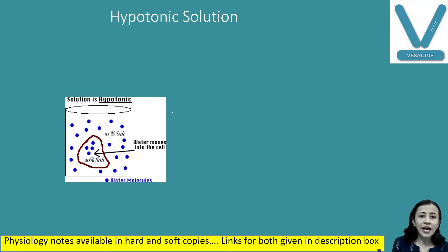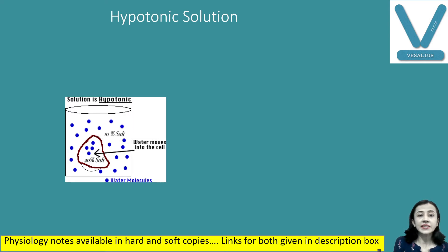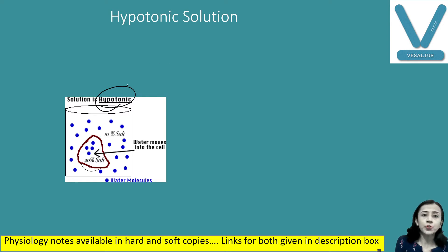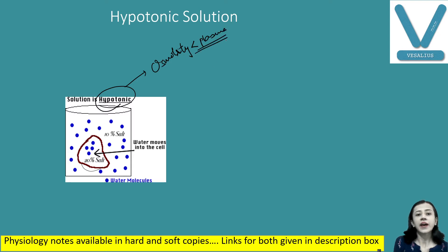The RBC membrane is also semi-permeable, permeable to solvent. Normally RBCs are placed in plasma having osmolarity of 270 to 290 milliosmoles per litre. Now if we place this RBC in hypotonic solution — hypotonic means its osmolarity is less than plasma — what happens?